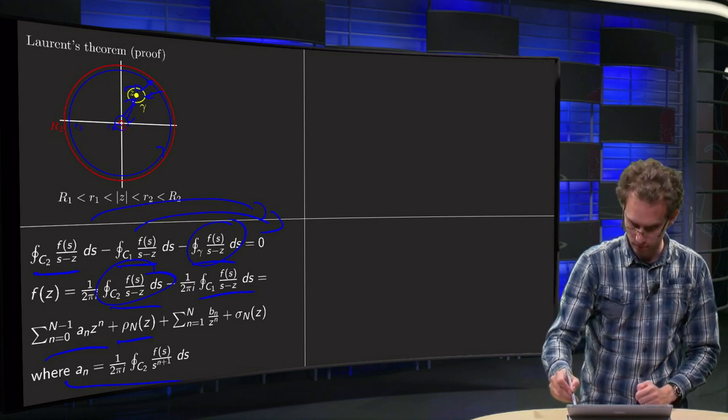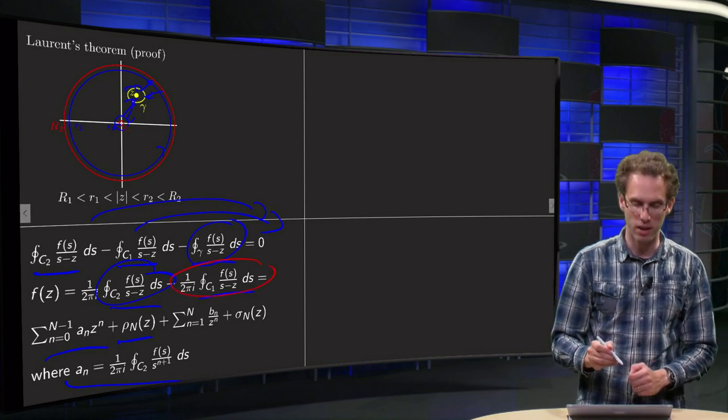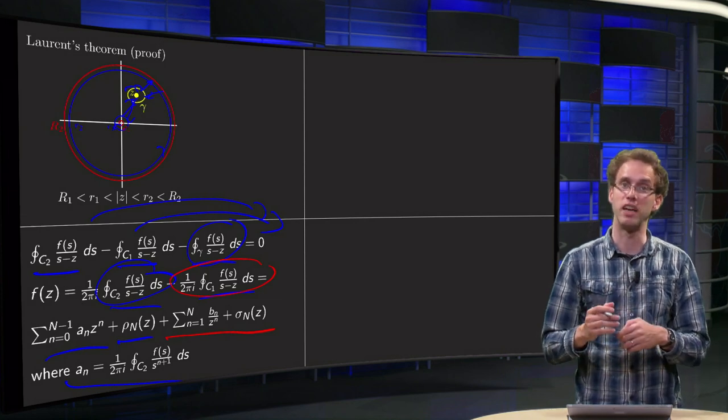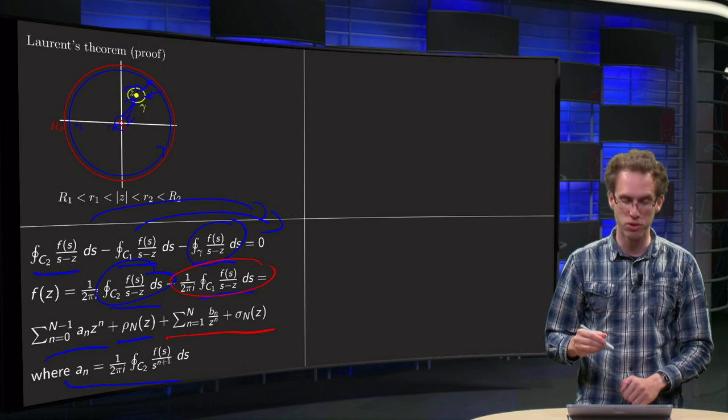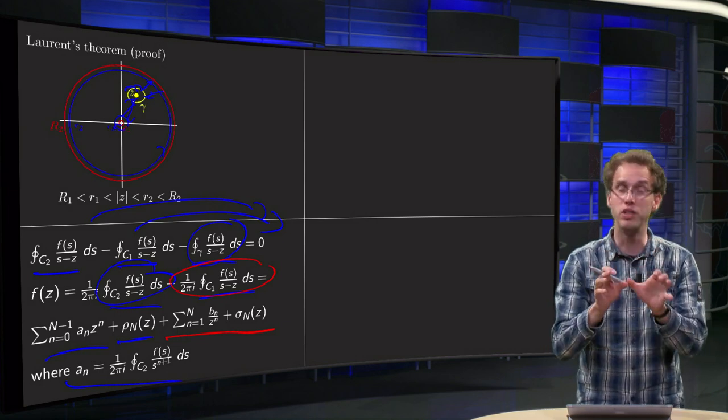And now we have a second contribution, this one from the C1, and that will give us our negative powers plus some σn of z, which will go to zero if n goes to infinity. So now we focus on the second part, we focus on the new part.